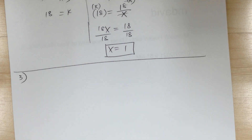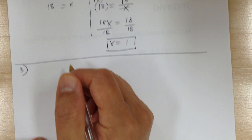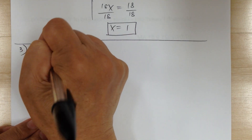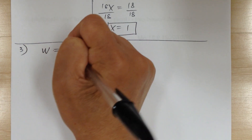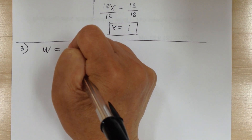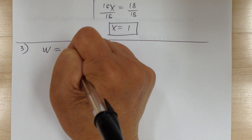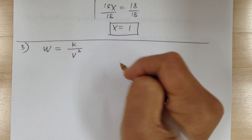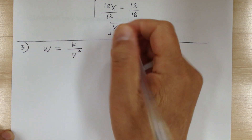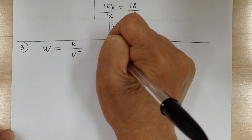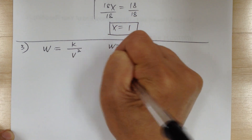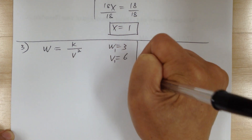Number 3: if w is inversely proportional to the square of v. Case 1: w equals 3 when v equals 6.